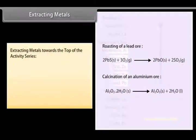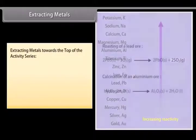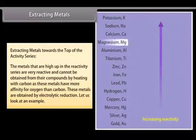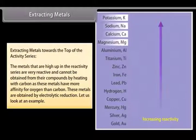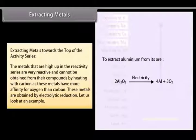Extracting metals towards the top of the activity series. The metals that are high up in the reactivity series are very reactive and cannot be obtained from their compounds by heating with carbon as these metals have more affinity for oxygen than carbon. These metals are obtained by electrolytic reduction.